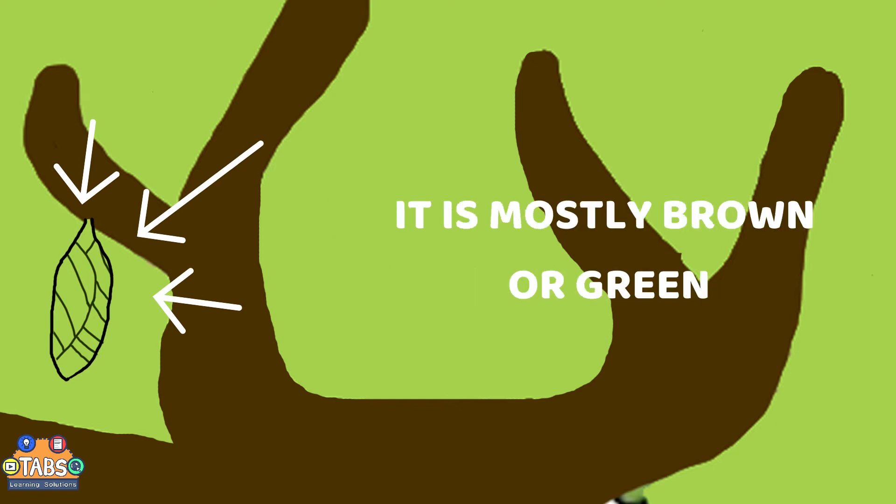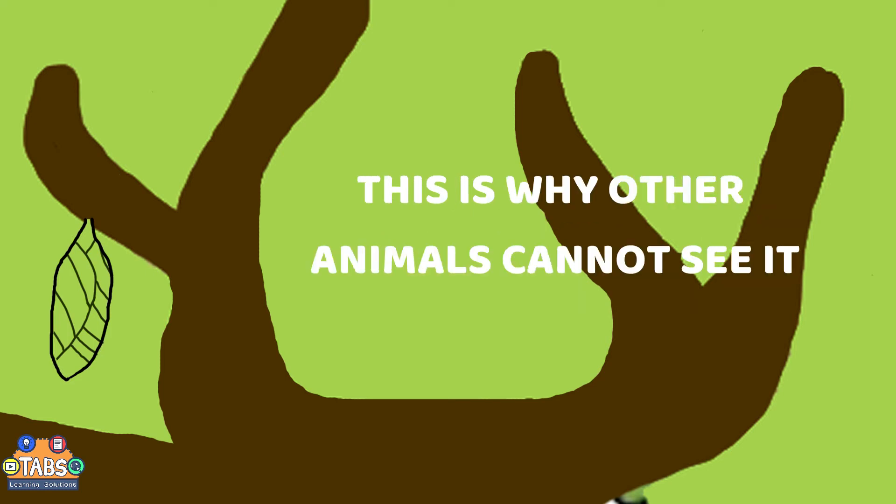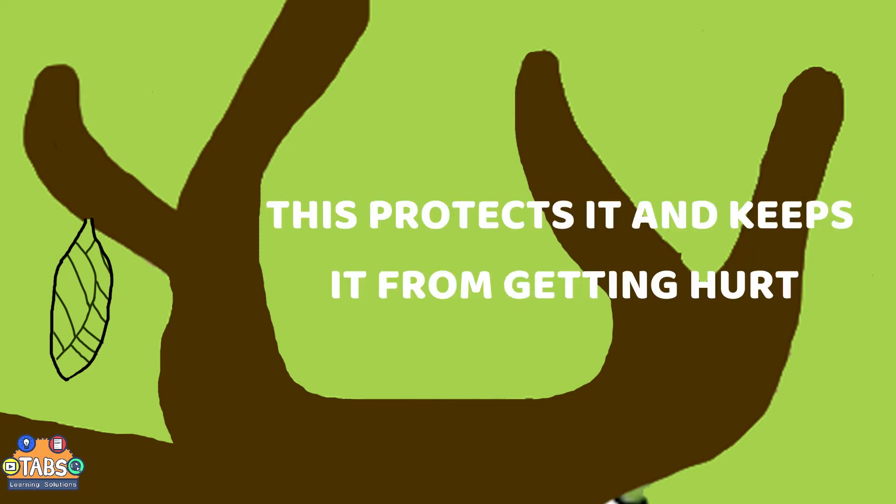It is mostly brown or green. It is the same color as the things around it. This is why other animals cannot see it. This protects it and keeps it from getting hurt.